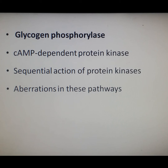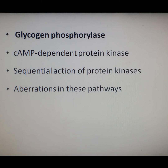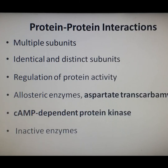The signaling pathway leading to activation of glycogen phosphorylase is initiated by binding of small molecules at the cell surface: epinephrine binding to its receptor and cyclic AMP binding to cyclic AMP-dependent protein kinase. The signal is then transmitted to intracellular targets by sequential action of protein kinases. Similar signaling pathways involving protein kinases and phosphatases regulate almost all aspects of eukaryotic cell behavior, and abnormalities in these pathways can cause diseases associated with improper regulation of cell growth and differentiation, including cancer.